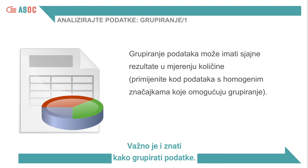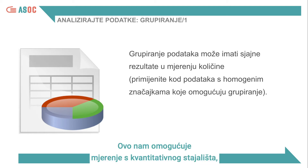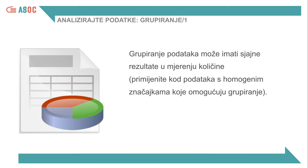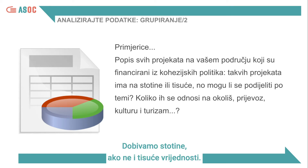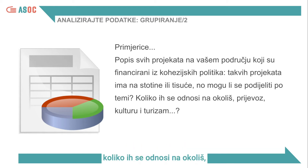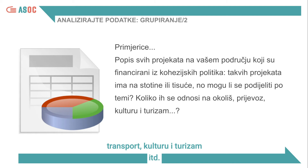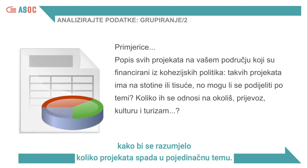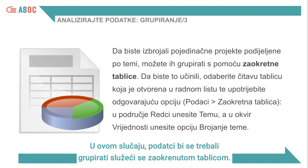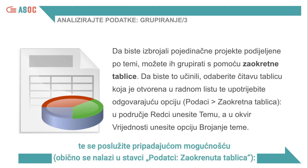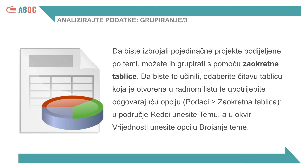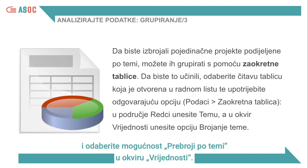It's also important to know how to group data. This allows us to make quantitative measurements, at least when the data has homogeneous characteristics. For example, take the list of all the projects financed by cohesion policies in your territory — that gives us hundreds, if not thousands, of values. We need to understand how they are distributed by theme: how many refer to environment, transport, culture and tourism, and so on. The objective is to group by theme to understand how many projects fall under each theme. The data should be grouped using a pivot table: select the entire table in a spreadsheet and use the relevant option, usually found in Data Pivot Table. Enter Theme in the rows area and the Count of Themes option in the Values box.